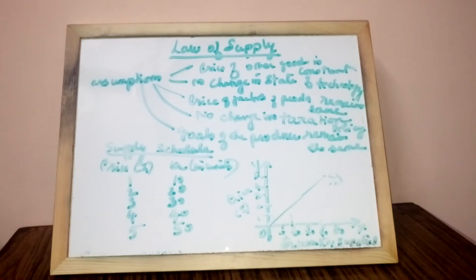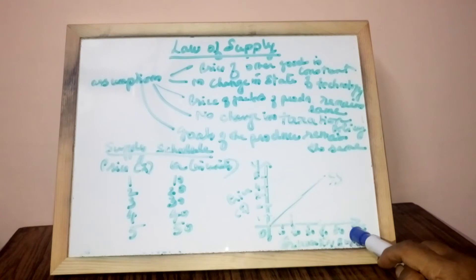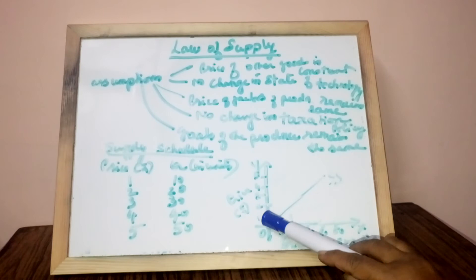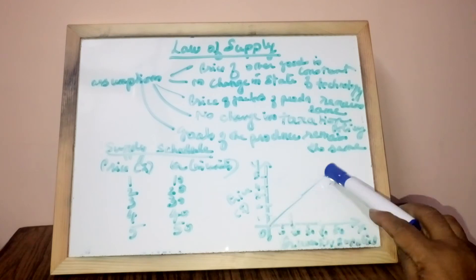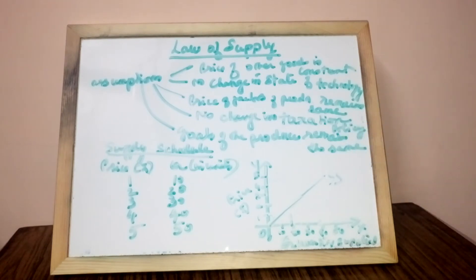Looking at the table: at rupee 1, 10 units of quantity supplied; rupee 2, 20 units; rupee 3, 30 units; rupee 4, 40 units; rupee 5, 50 units. These are plotted on a graph with quantity supplied in units on the x-axis and price on the y-axis, and the plots are joined to get SS, the supply curve.